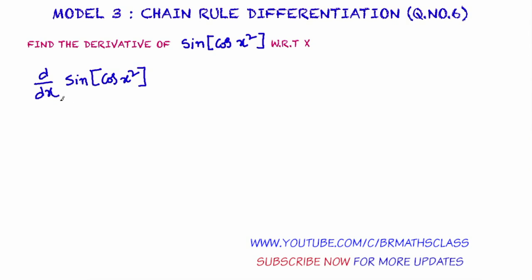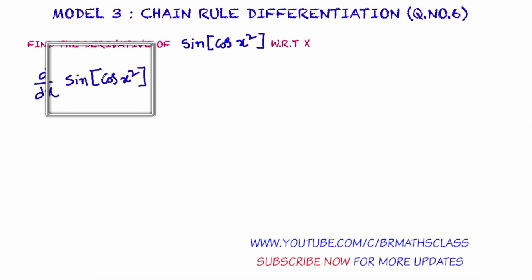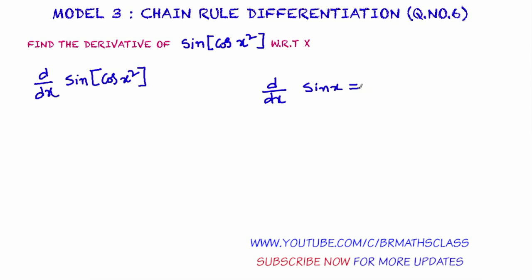We learn 17 formulas in the differentiation chapter. Do we have any direct formula for d by dx of sine of cos x squared? No, we don't have any direct formula. But we know d by dx of sine x — the derivative of sine x is equals to cos x.